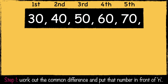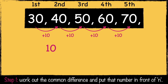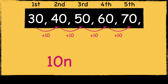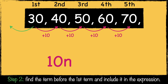Here's the first sequence: 30, 40, 50, 60, and 70. First, we need to work out the common difference. In this sequence, we're adding 10 to each number, so the first part of this expression is 10n. Now we need to find the term that comes before the first term. As this sequence is adding 10 each time, we need to subtract 10, so 30 take away 10 is 20. So the nth term expression for this sequence is 10n add 20.